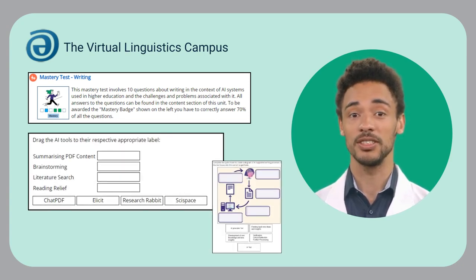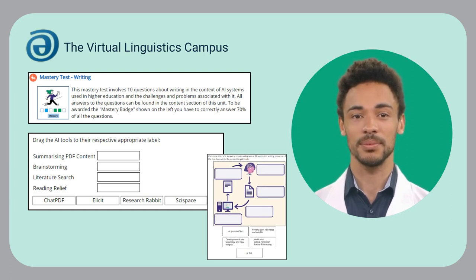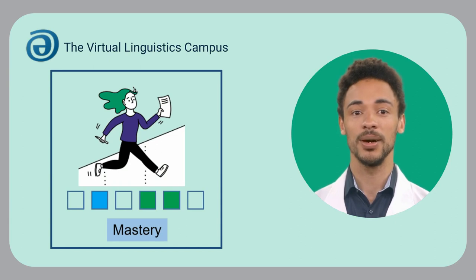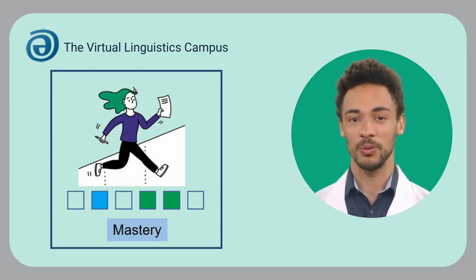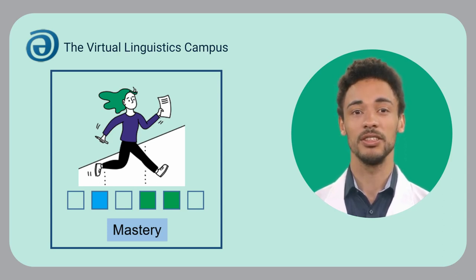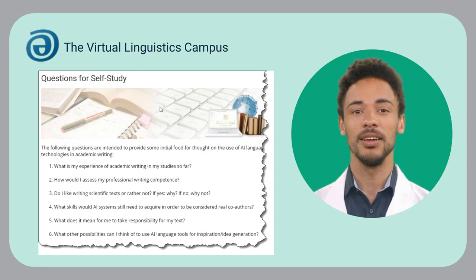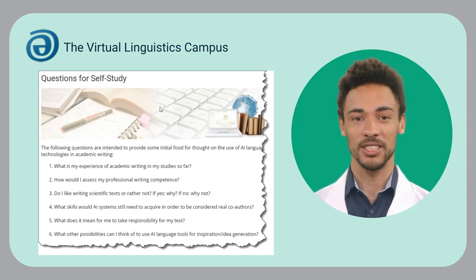The mastery test covers AI systems used in higher education and the challenges and problems associated with it. To be awarded the mastery badge shown here, you have to correctly answer 70% of all the questions. This should be easy for you since all answers to the questions can be found in the content section of this unit.